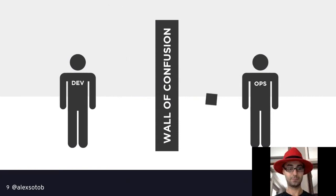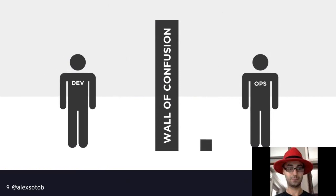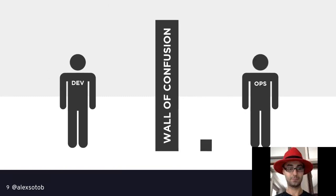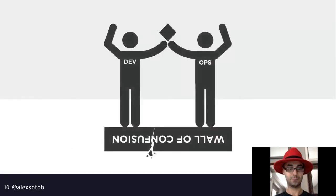What is happening today in most companies is that developers are not responsible for what happens after they check in code. The lifecycle for a developer is: go to the issue tracker, get an issue, create a branch with git, fix the problem, write a test, try it locally, push the code, wait for the CI system like Jenkins to confirm everything is green, someone reviews and merges into the master branch. That's all - they don't care about how the software gets deployed to production.